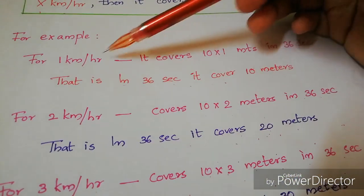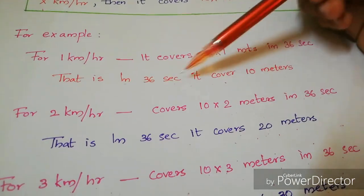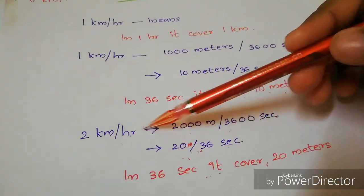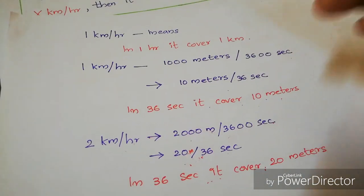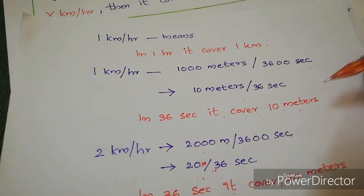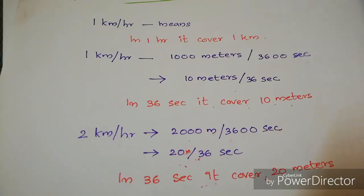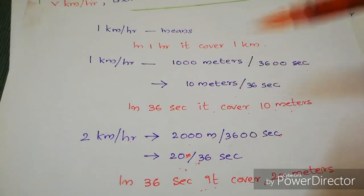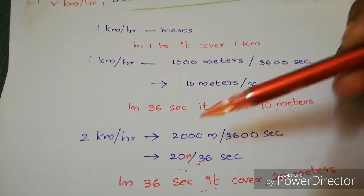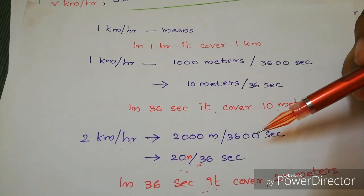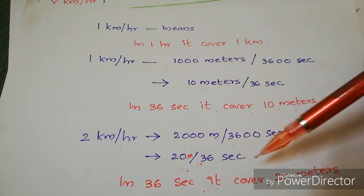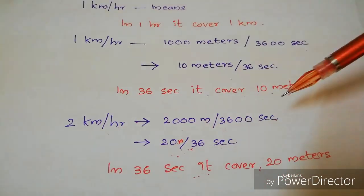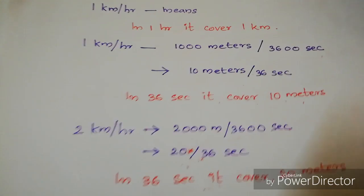For 2 kilometers per hour: 2 kilometers = 2000 meters, and 1 hour = 3600 seconds. Simplifying, we get 120 meters per 36 seconds — in other words, in 36 seconds it covers 20 meters.